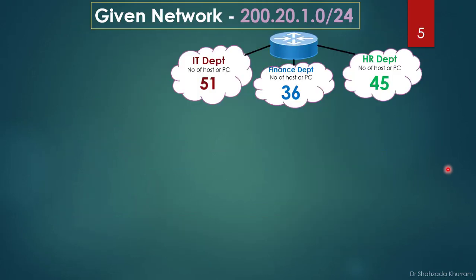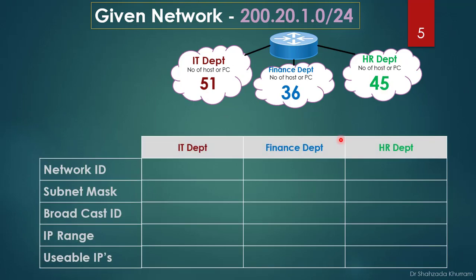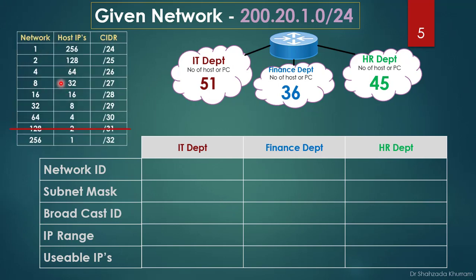Now let's apply subnetting to the same scenario. We have the IT department needing 51 IPs, Finance needing 36 IPs, and HR needing 45 IPs. We will build a table to calculate the network ID, subnet mask, broadcast ID, IP range, and usable IPs for each department.